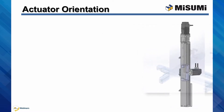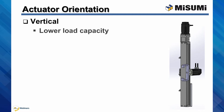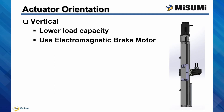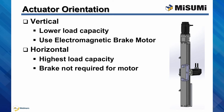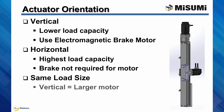The actuator orientation will dictate the size and type of motor used to drive the LX actuator, as well as the load ratings for the actuator and motor combination. An actuator in a vertical orientation has a lower load capability, and the use of an electromagnetic brake motor is highly recommended to prevent the load from falling during a power failure event. In a horizontal orientation, the highest load capacity can be achieved and a brake is not required. When comparing the two orientations using the same load, a vertical actuator will require a larger, more powerful motor compared to the same actuator mounted horizontally.